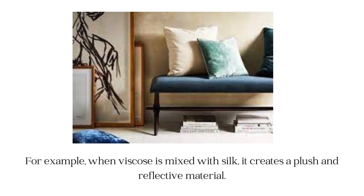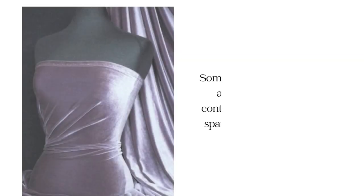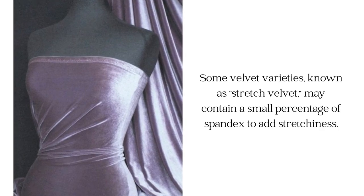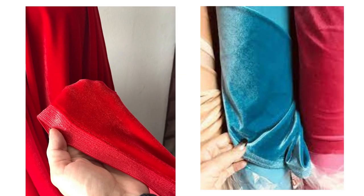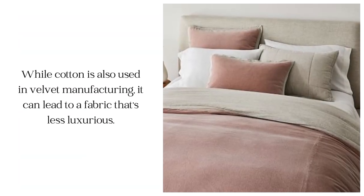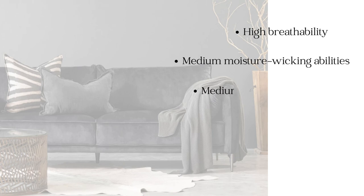For example, a blend of viscose and silk fiber is used to produce velvet fabric that is very soft. You can also add a small percentage of spandex to velvet fabric. It is considered a luxurious fabric. Velvet fabric has a medium to high moisture absorption ability and medium heat retention.